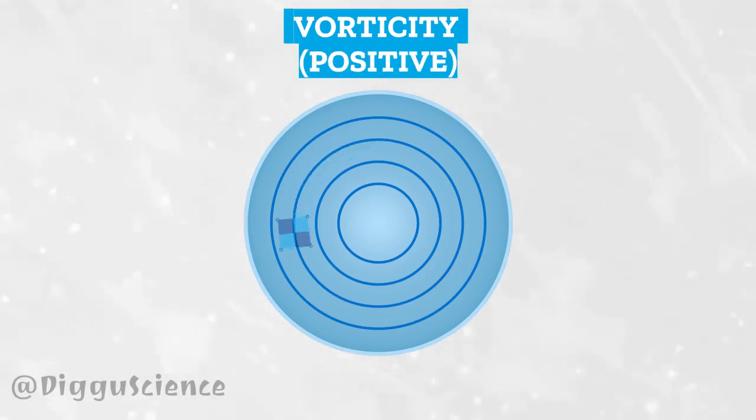A positive value of vorticity means that the fluid parcel rotates counterclockwise. A negative value for vorticity means that the fluid parcel rotates clockwise.